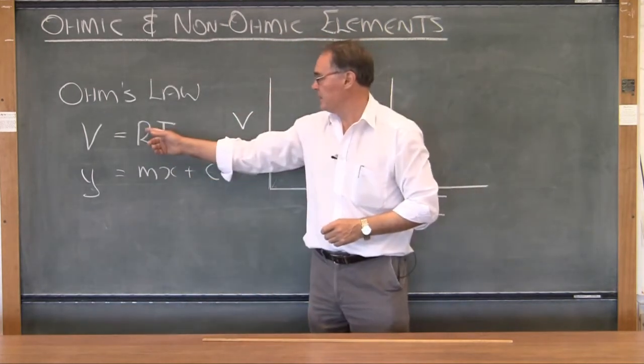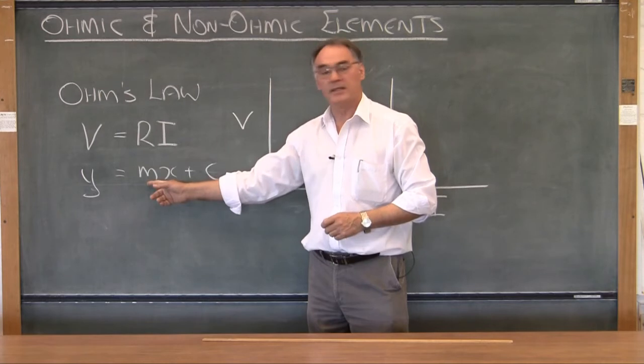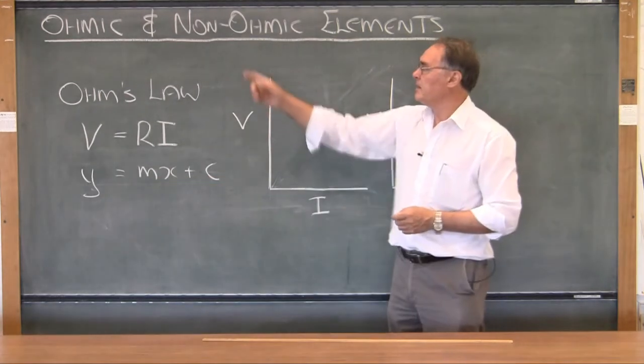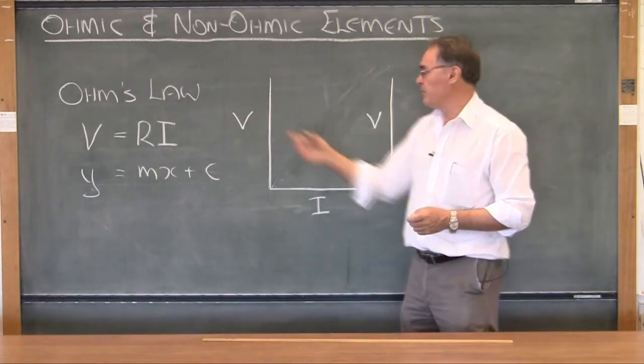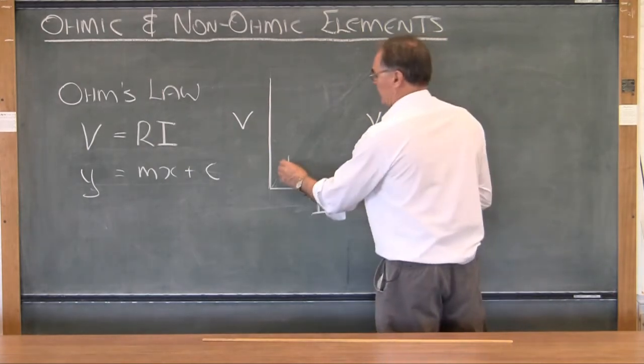Where the resistance stands in the place of the gradient of a straight line. And in the case of the ohmic element, you would have come across a graph that looks something like this.